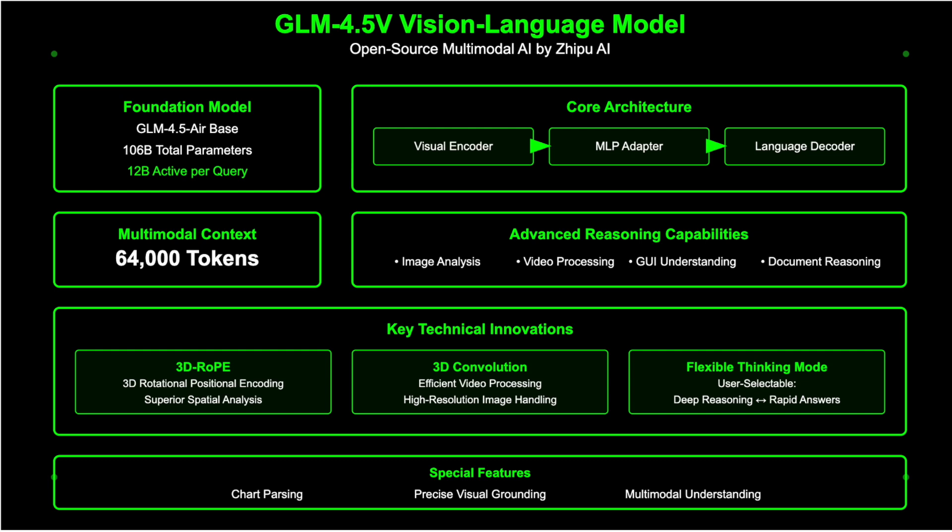The architecture integrates a visual encoder, MLP adapter, and language decoder, supporting a 64,000 token multimodal context length and advanced image, video, GUI, and document reasoning, including chart parsing and precise visual grounding.